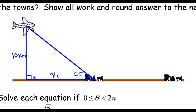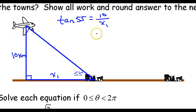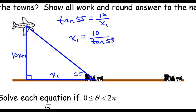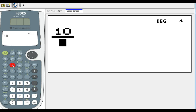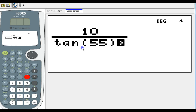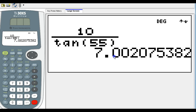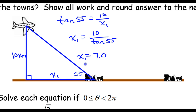Using opposite over adjacent, this is the tangent function again. Tangent of 55 equals 10 over x1. Using the shortcut, x1 equals 10 over tangent of 55, which gives x1 equals 7.0 kilometers. That's not the final answer, but something we'll need.